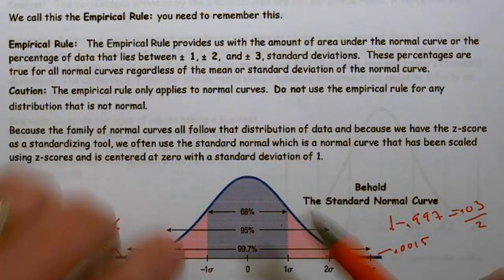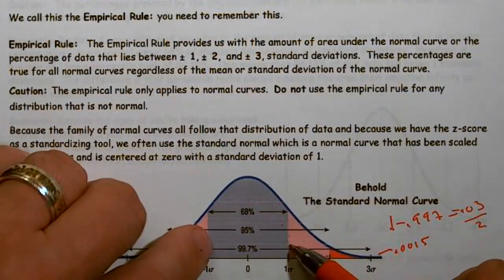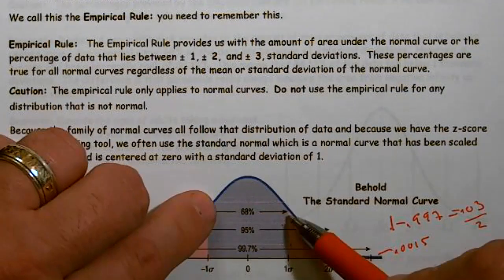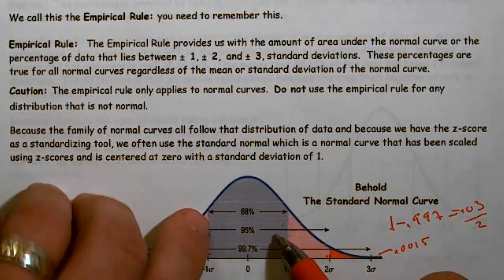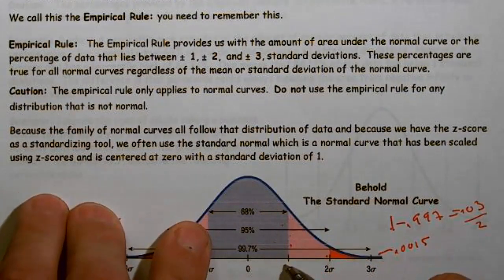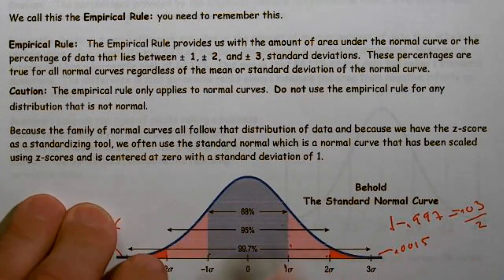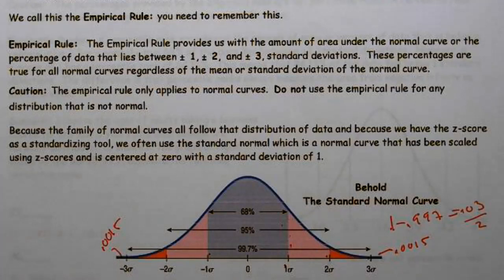Notice that the greatest percentage of scores is in the center, and it gets smaller the farther out you go. Most scores fall between negative one and positive one standard deviation — that's 68% of the data. We'll break that down further later in this video.